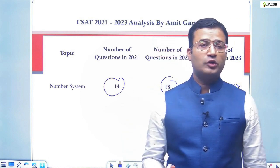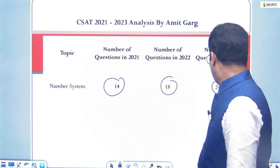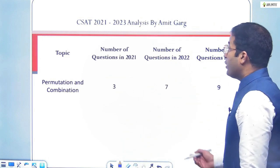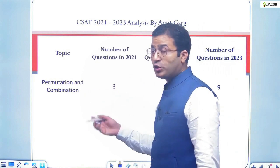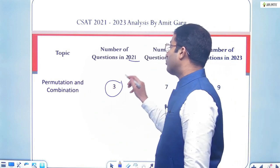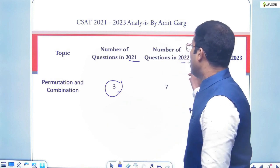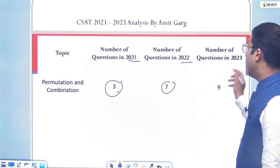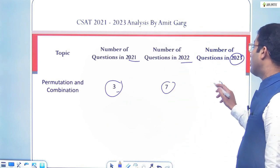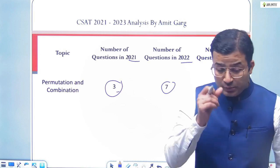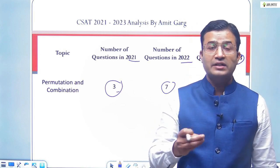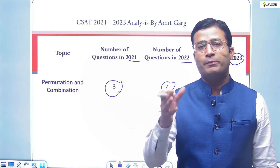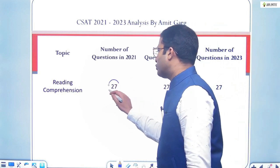Nearly one-third of questions were asked from number system. Next, in permutation and combination, they also asked more questions: in 2021 three questions, 2022 seven questions, and in 2023 they asked nine questions. Permutation and combination is considered one of the difficult topics in aptitude.